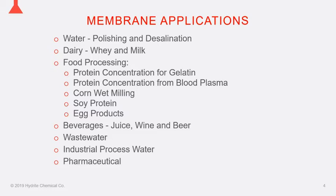Where we do get involved and see most membrane usage is in the dairy industry — whey and milk fractionation, separations, and concentrations. Other areas include the concentration of gelatin, blood plasma, corn wet milling, soy products, and egg proteins. We're also seeing more plant-based proteins, pea proteins, etc., which goes along with soy proteins.